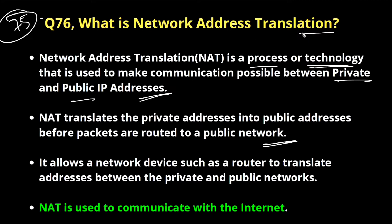NAT is a technology which you can run on a firewall, on a router, on your border router, on your edge router. It allows a network device such as a router to translate addresses between private and public networks. Suppose I have one network like this — here is my switch and here is my user.